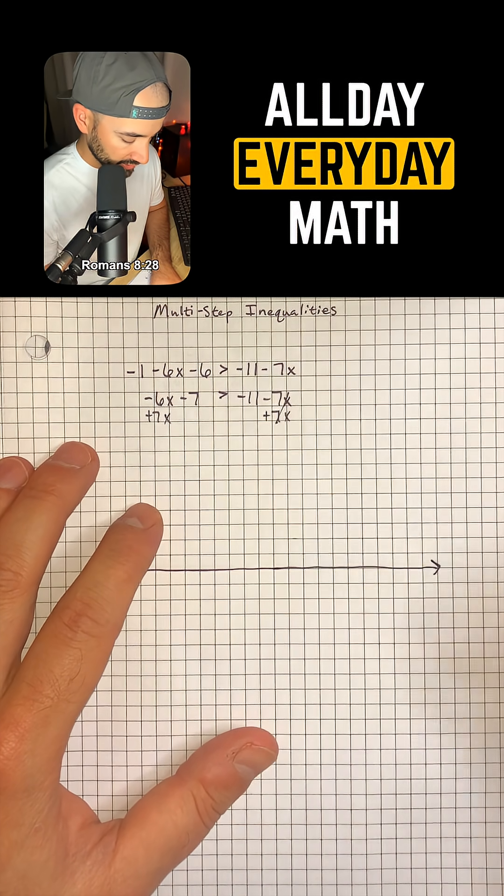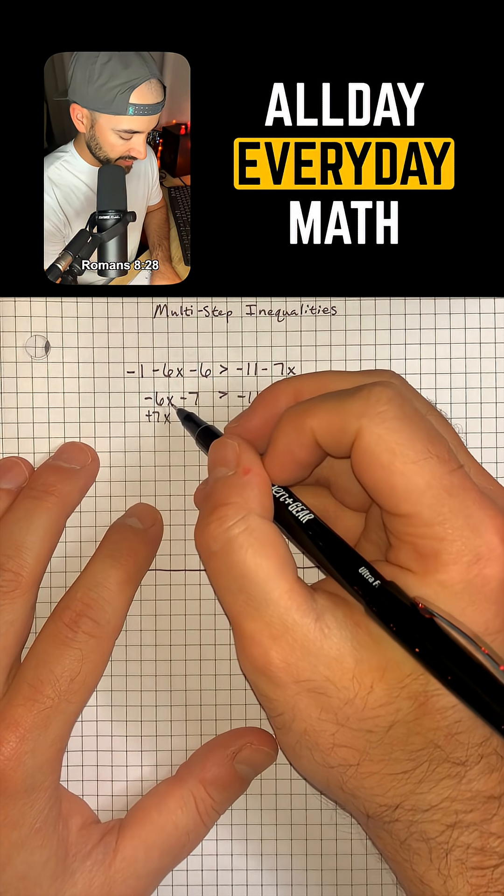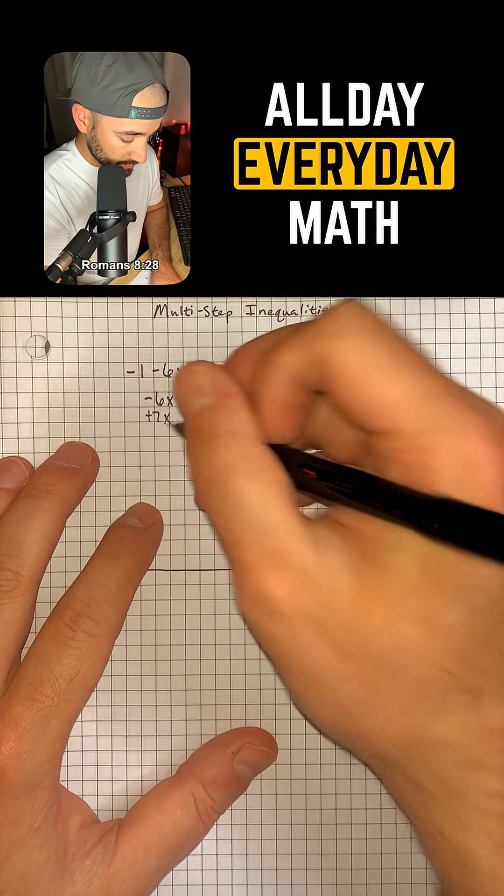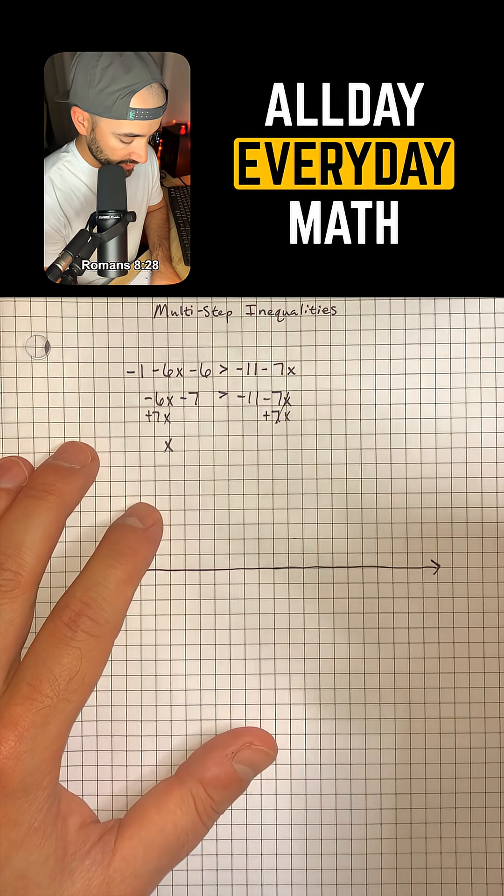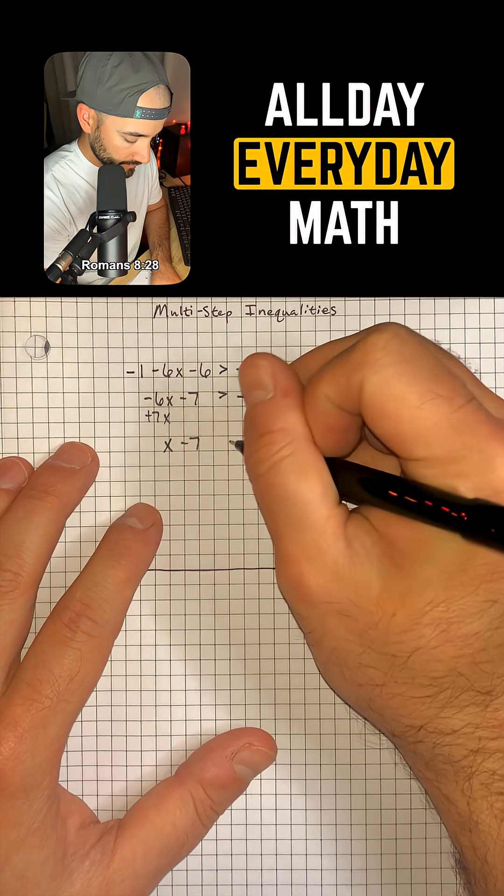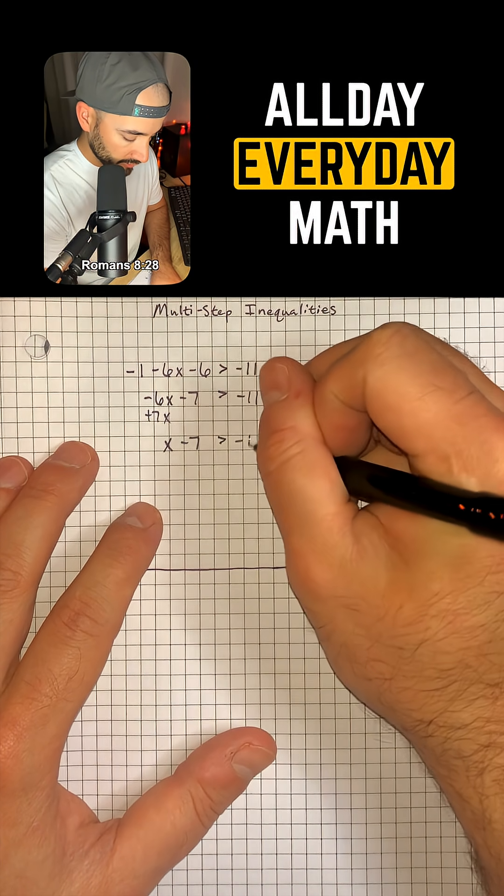That's going to cancel and leave us with negative 6x plus 7x, which is just positive 1 or positive x, minus 7 is greater than negative 11.